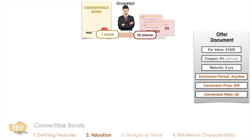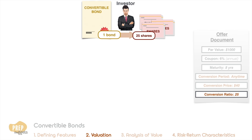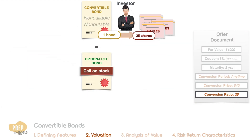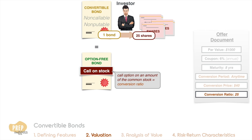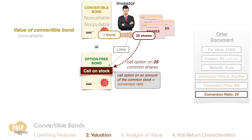For investors, buying a non-callable or non-putable convertible bond is equivalent to buying an option-free bond with an embedded call option on an amount of common stock equal to the conversion ratio. In this case, the conversion ratio is 25, so this is a call option on 25 shares. Be very clear — this is a call option on the stock, not the bond. Since the investor is long the call option, the value of a convertible bond is simply the value of a straight bond plus the value of the call option on the stock.